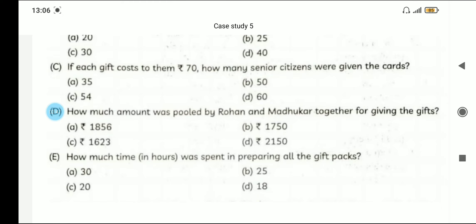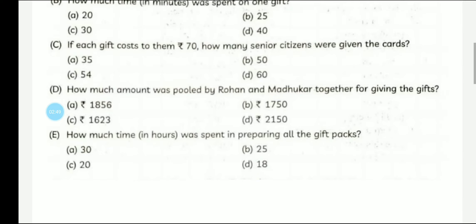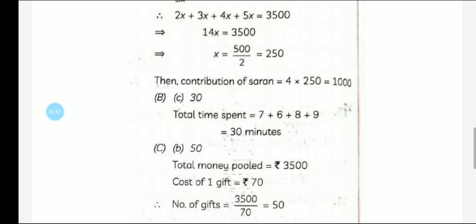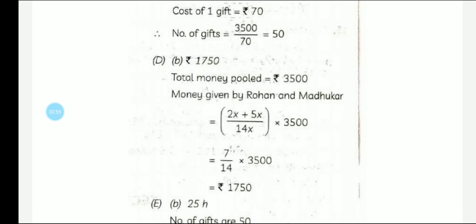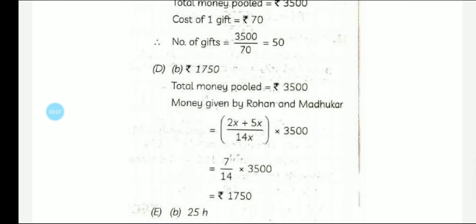How much amount was pooled by Rohan and Madhukar together for giving the gifts? Their ratio shares are 2x and 5x respectively, so we add them to get 7x. We divide 7 by the total ratio of 14, then multiply by the total amount of Rs. 3500: 7/14 × 3500 = Rs. 1750.